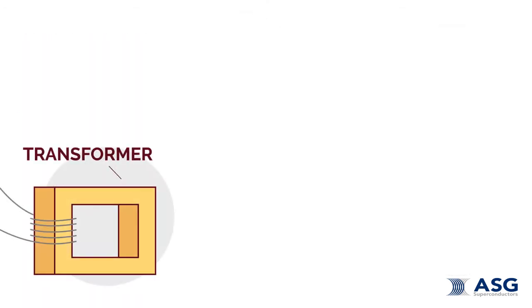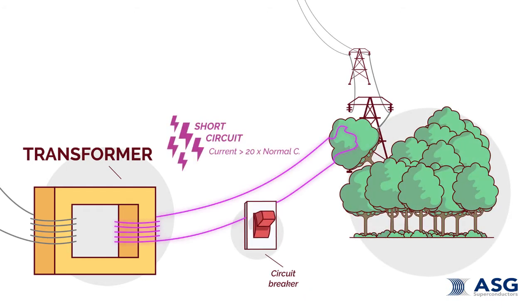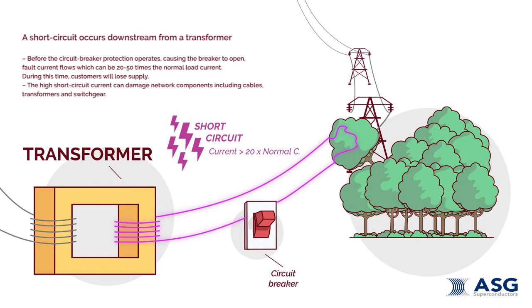Before the circuit breaker's protection system operates, causing the breaker to open, fault current flows which can be 20 to 50 times the normal load current. During this time, customers experience loss of supply.